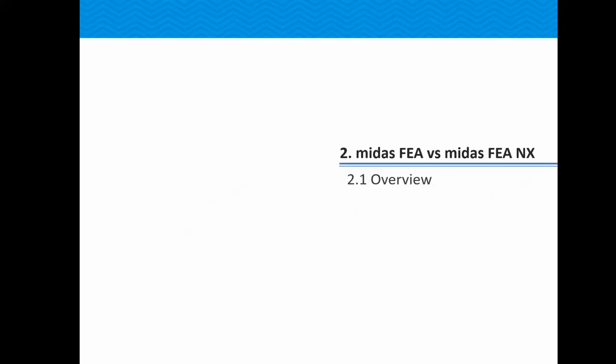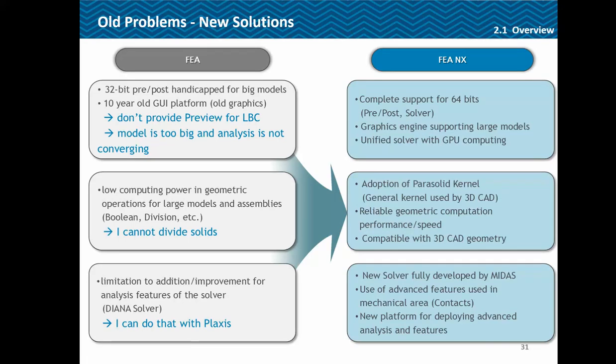Coming to the overview — FEA vs FEA NX. The general problems faced with the old version were its 32-bit processor and very old GUI. Clients used to complain about models being too big, analysis not converging, and low computing power. FEA had problems with boolean operations for complex geometries, generating failed shapes. Certain features couldn't be added because the solver was shared. But now we have developed our own solver.